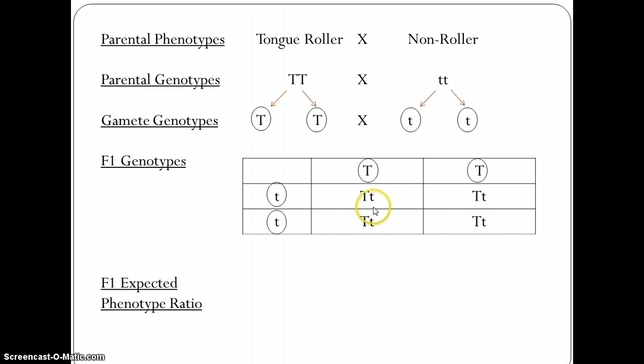In each box you show the genotypes that you would expect if the gamete from this parent was to fuse with this gamete of this parent. The offspring genotype would have large T small t. In that case, because tongue rolling the large T is the dominant allele, this offspring would be able to roll their tongue. You can see from the Punnett square that all of the offspring would be able to roll their tongue.